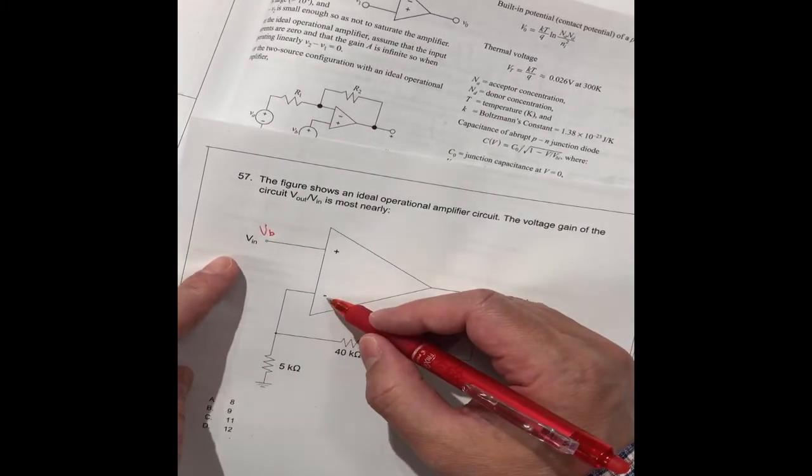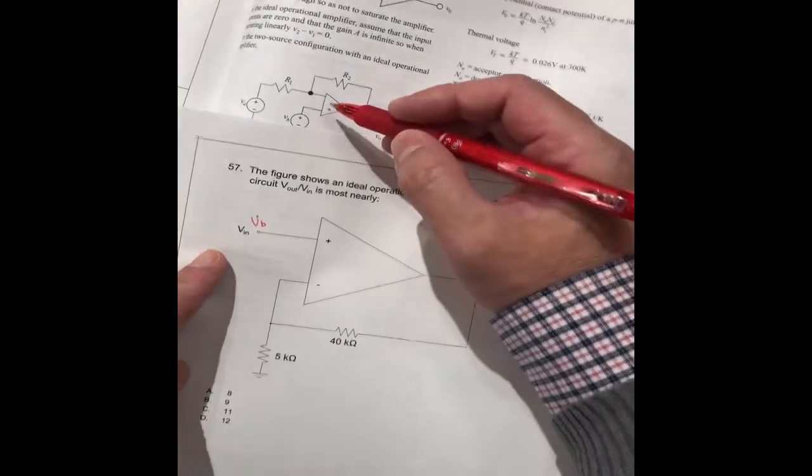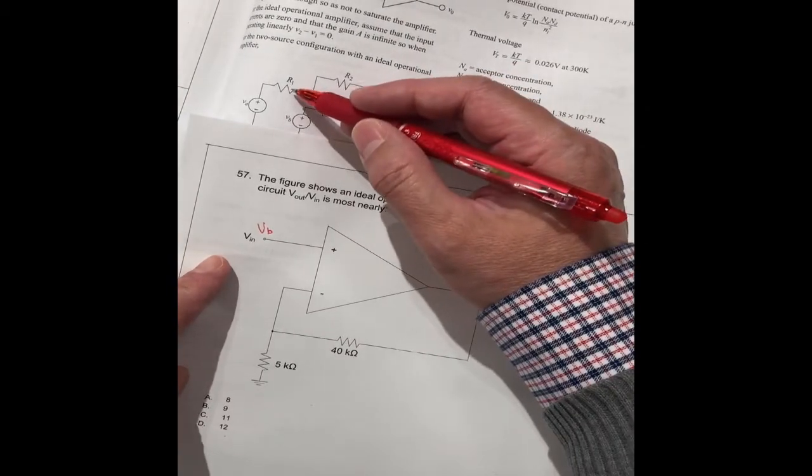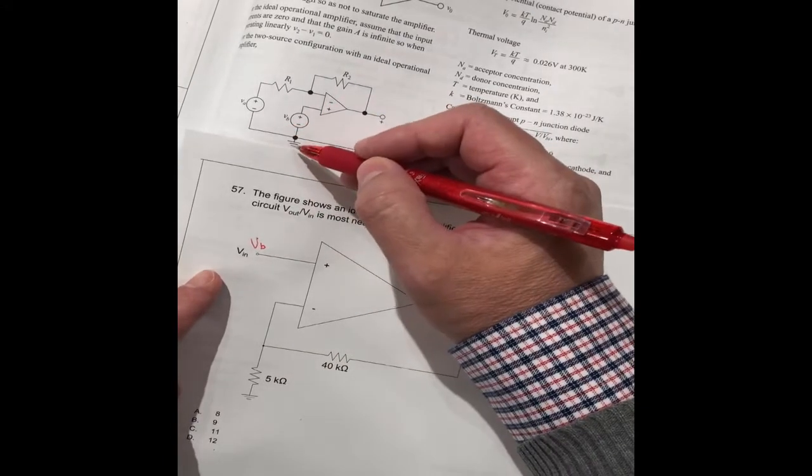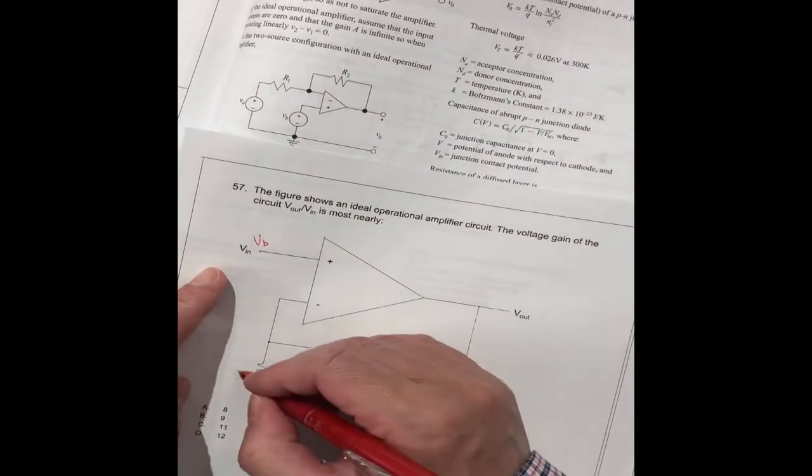And then this one, this is negative. Negative connector to this one, R1. To this R1 through the ground. This is R1.